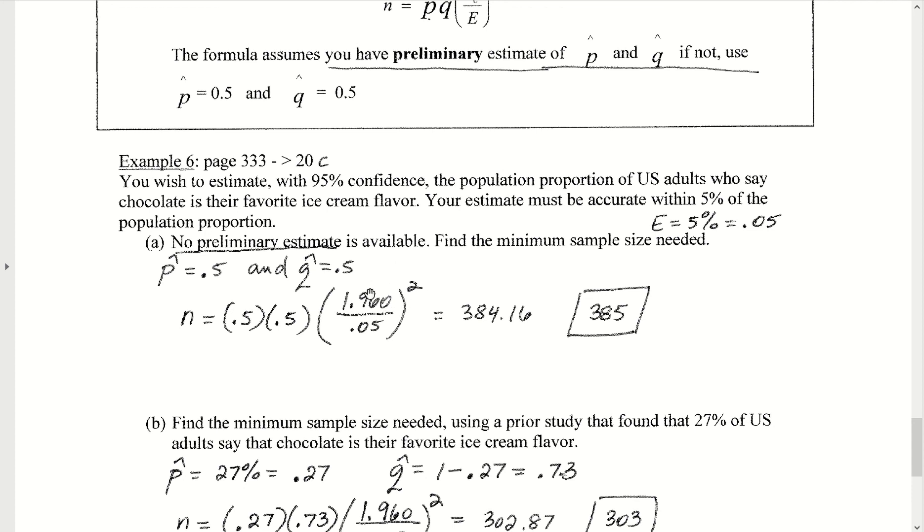If we work this all the way out, this would give us an N that's equal to 384.16. Again, because we have some kind of a decimal value here, that's going to have to get rounded up. That will round up and bump up to 385. So for this problem, to obtain a 95% confidence level, we would need a sample size of at least 385 individuals.